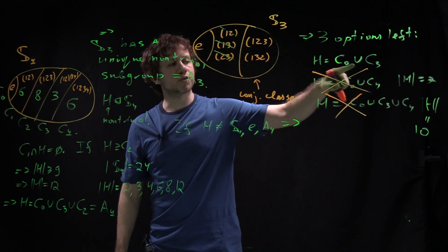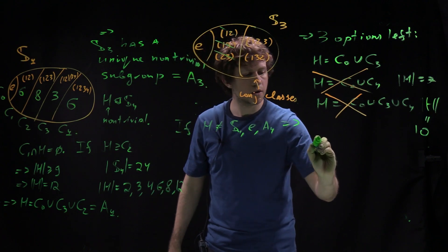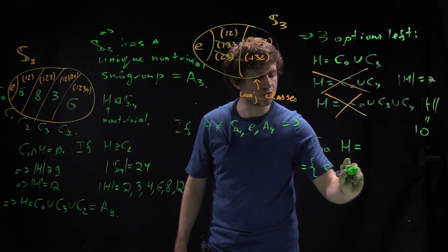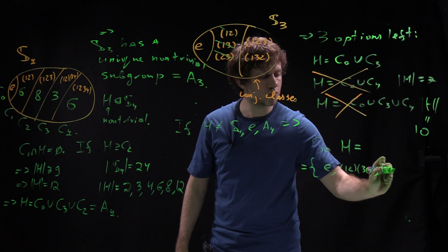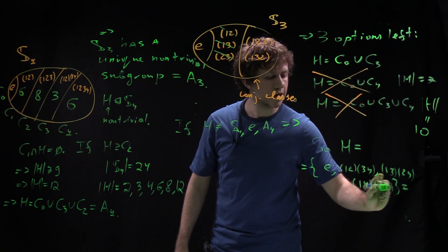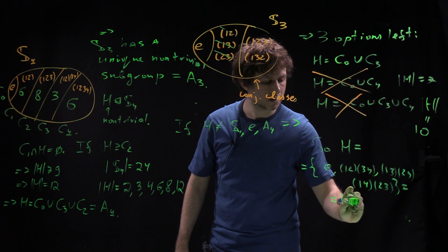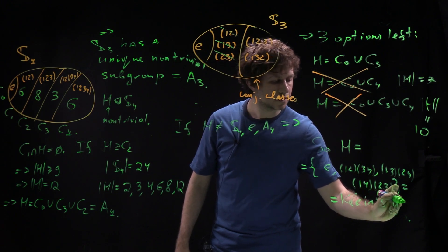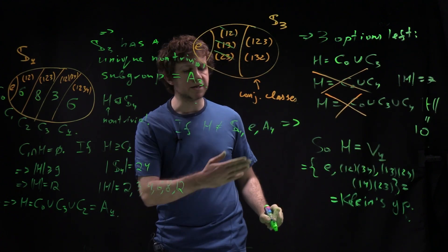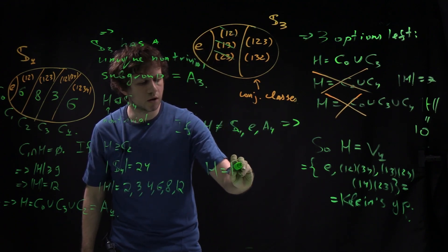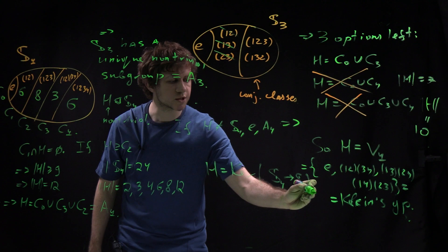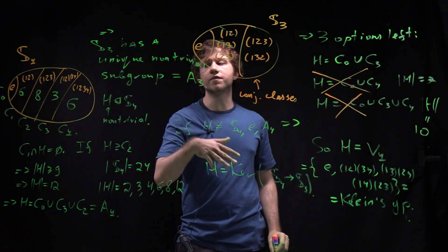The remaining option is H = C0 ∪ C3, which contains the four permutations: identity, (12)(34), (13)(24), (14)(23). This is Klein's four-group, usually denoted V4. In fact, V4 is the kernel of a homomorphism from S4 to S3 that we discussed when studying homomorphisms.